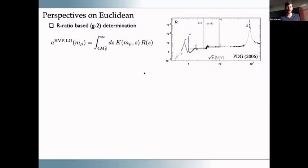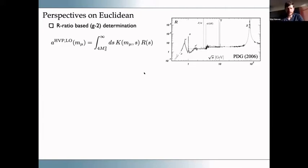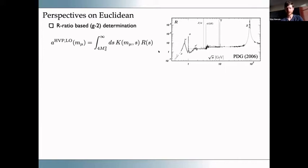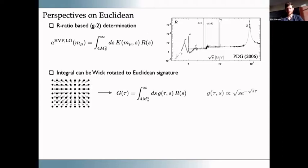I'd like to start with these perspectives on Euclidean approaches that we've seen from many others. Looking at g minus two and the R ratio, the R ratio is a very complicated thing with a rich peak structure of all the vector resonances that can be produced by the photon. But if we integrate this rich peak structure against a known kernel, we can extract a single number: the contribution of these hadronic states to the magnetic moment of the muon.